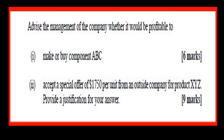Advise the management of the company whether it would be profitable to make or buy component ABC, and whether to accept a special offer of $17.50 per unit from an outside company for product XYZ. Provide a justification for your answer — nine marks each.